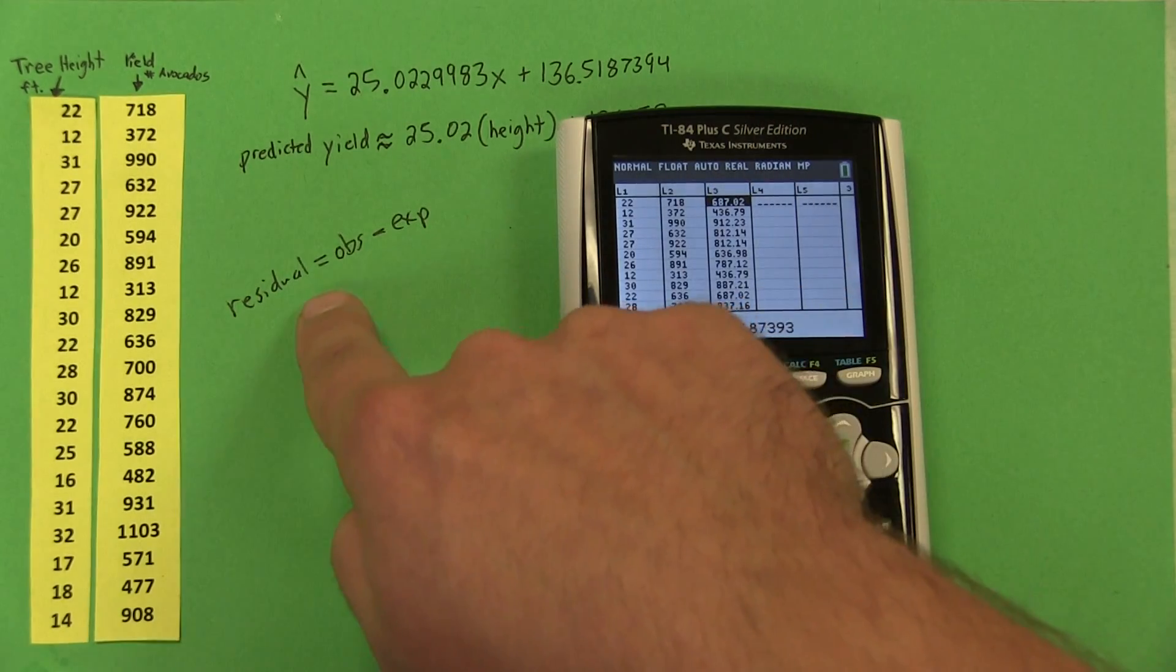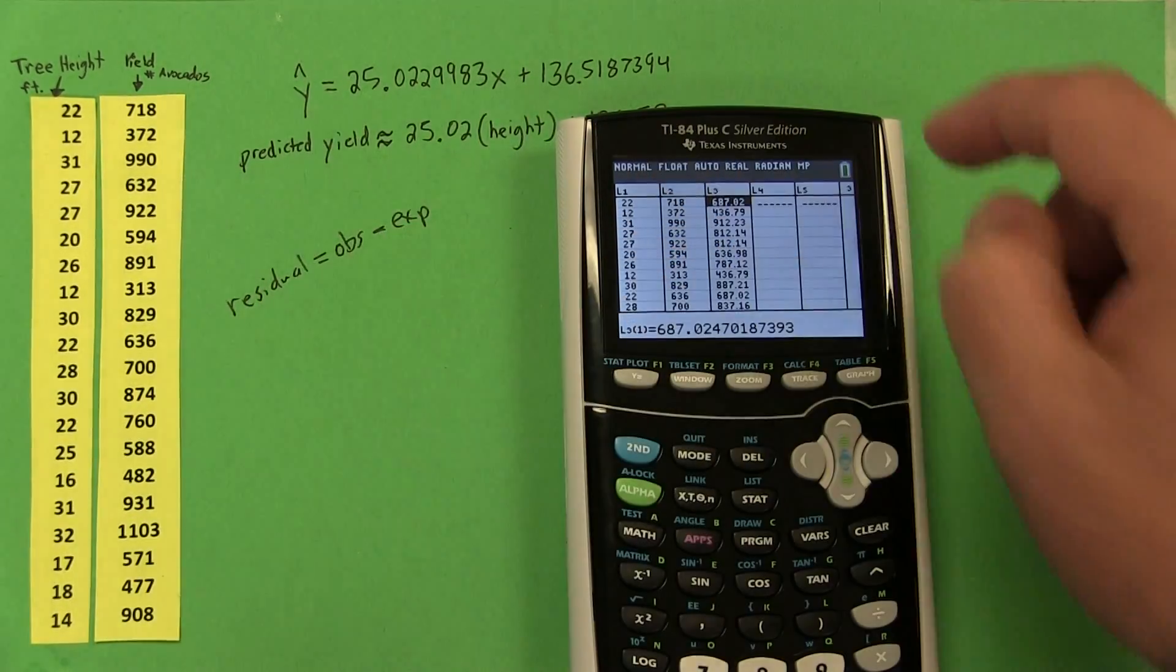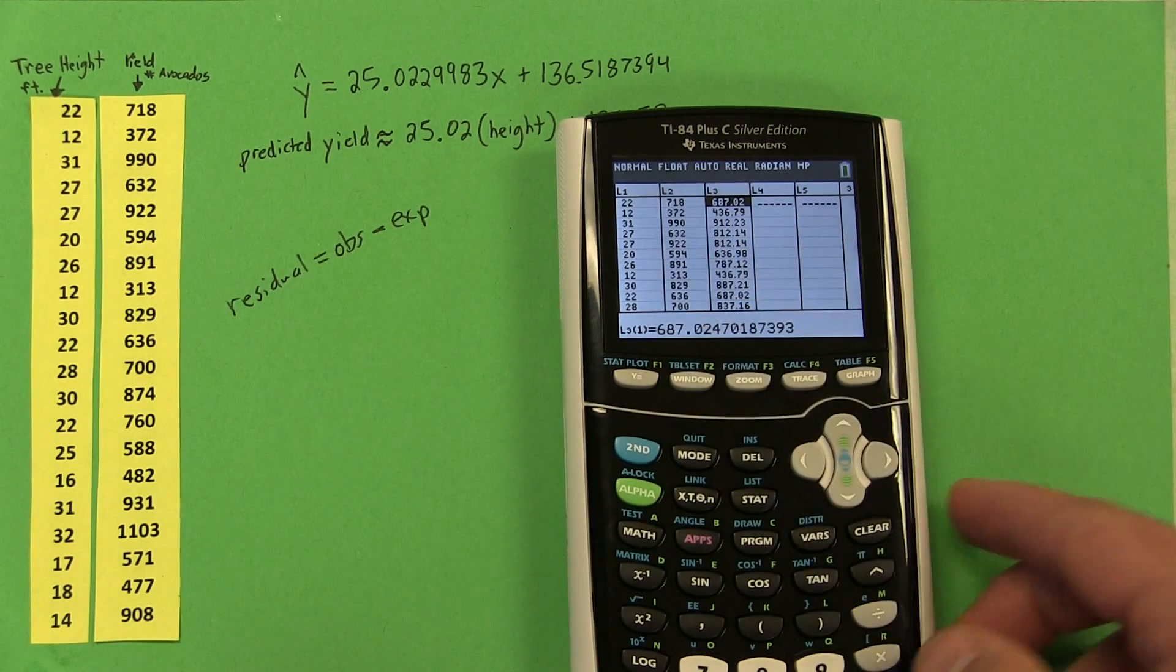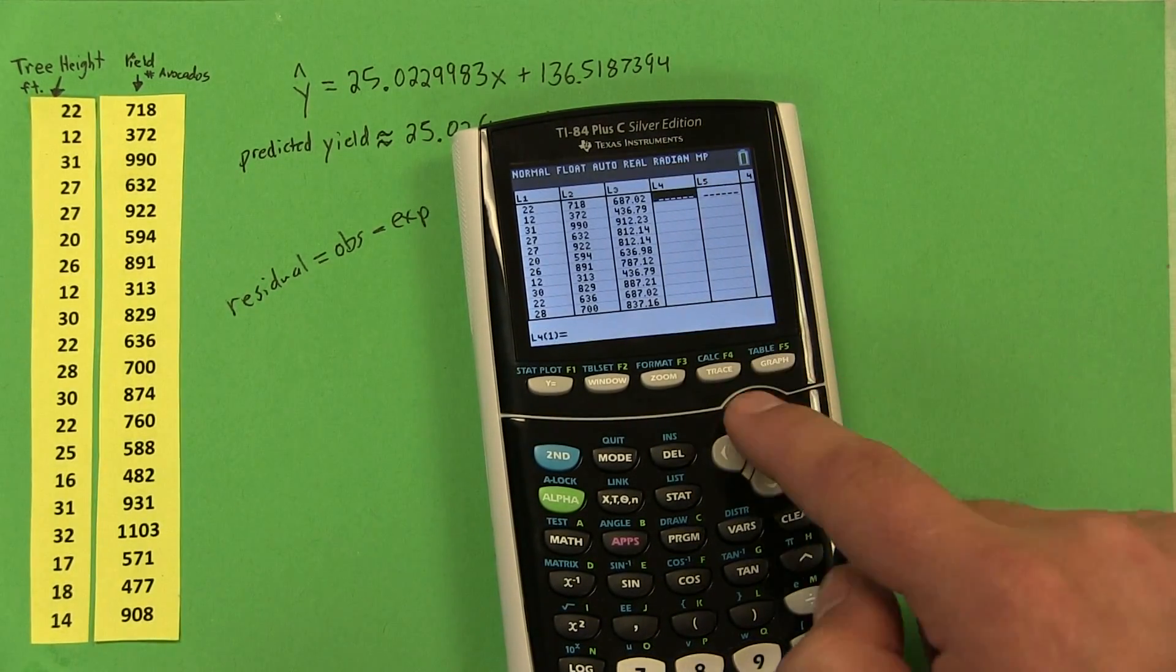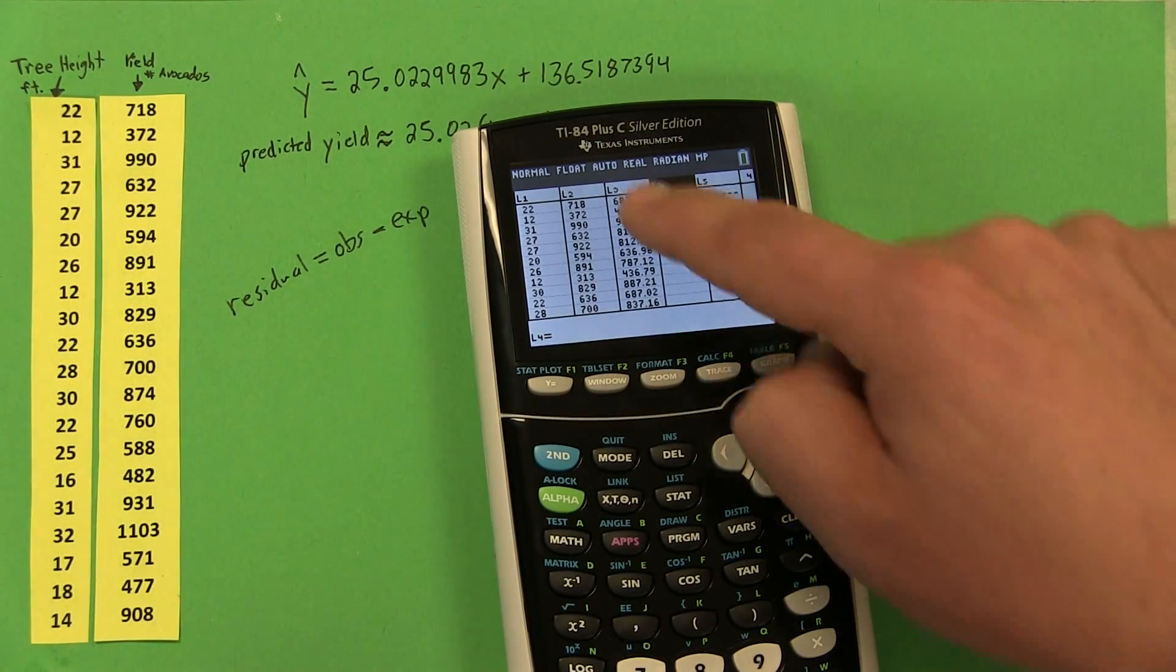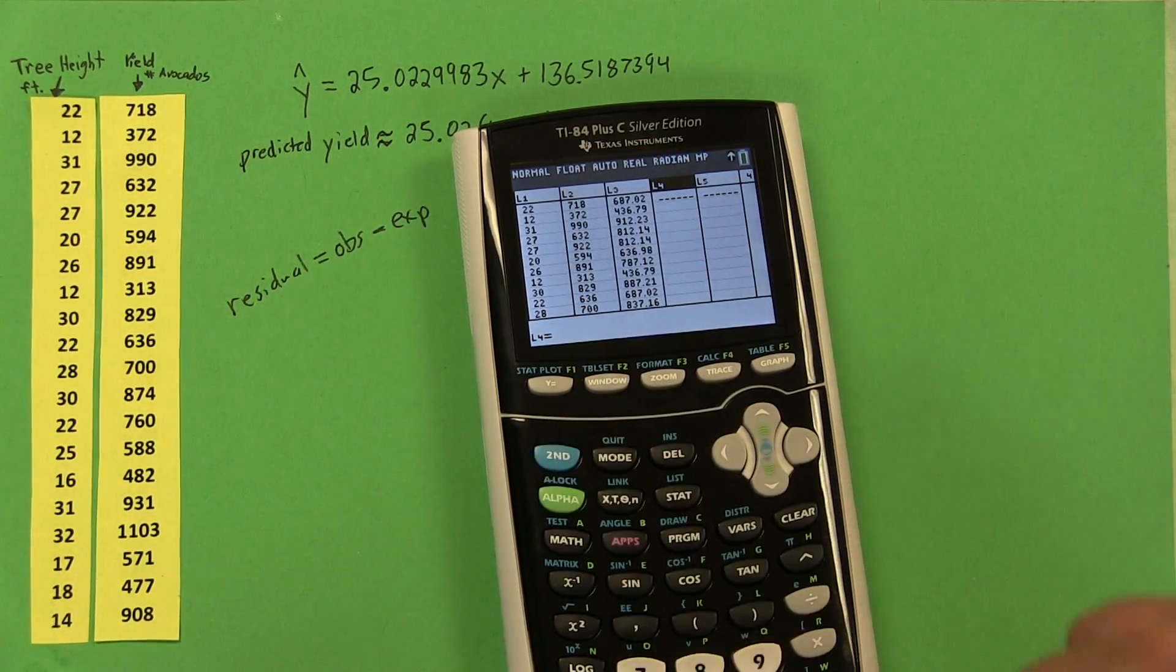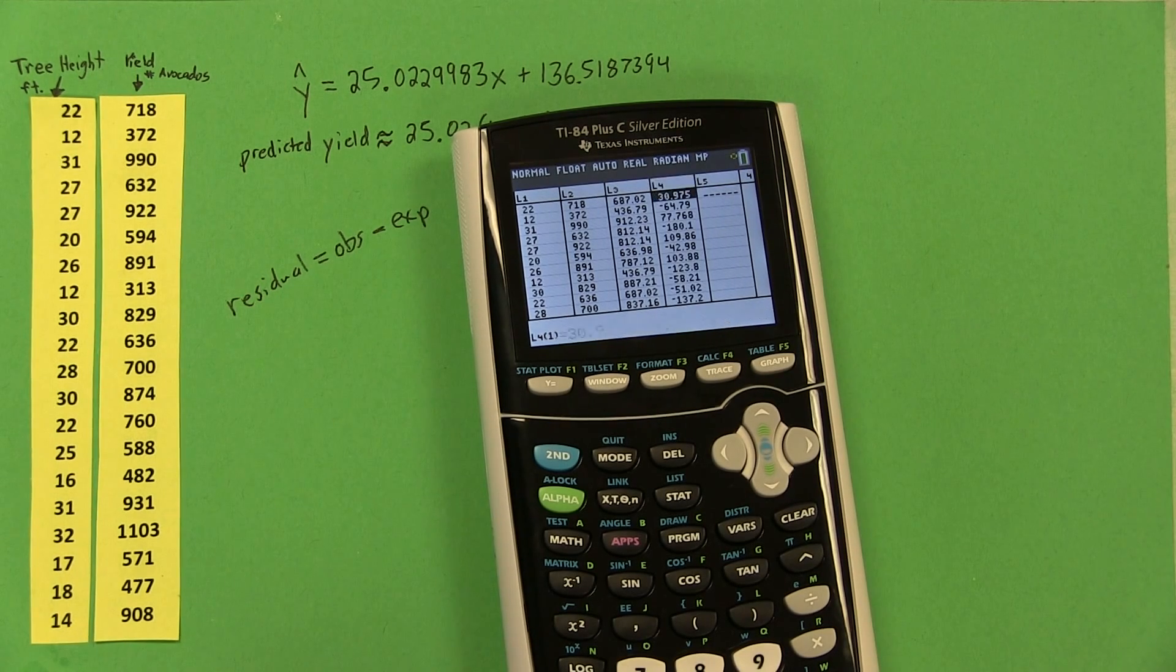Now, since the residual is the observed yield, which is those, minus the expected yield, which we just got in list 3 on our calculator, we can calculate the residuals in list 4. So I'm going to define list 4 by pushing up. I'll define list 4 as observed, which was list 2, so second 2, minus the expected, second 3. So list 2 minus list 3. There's my residuals.